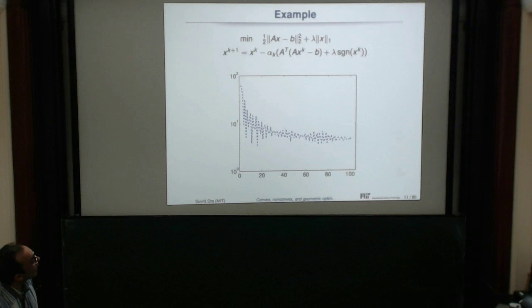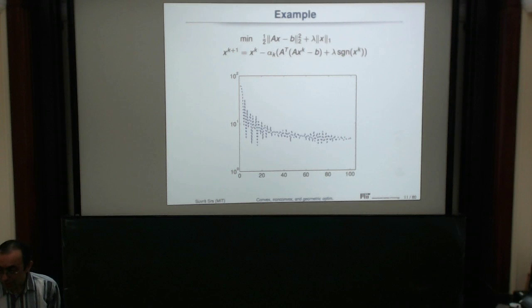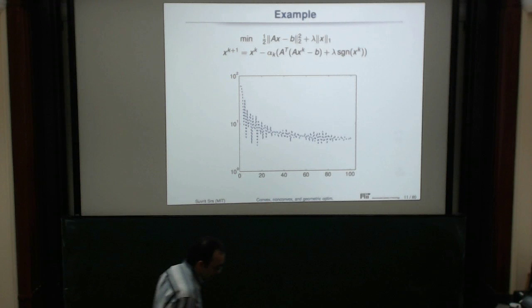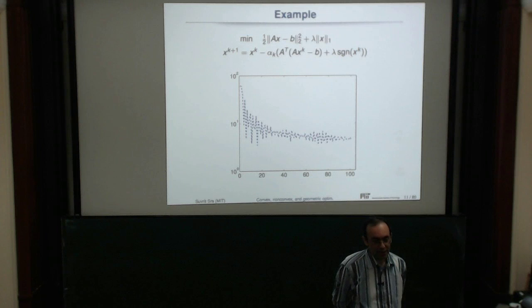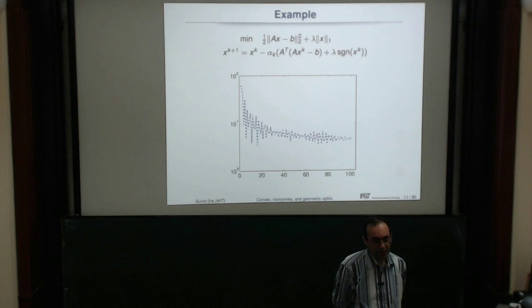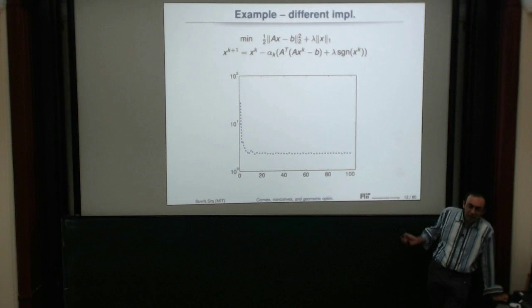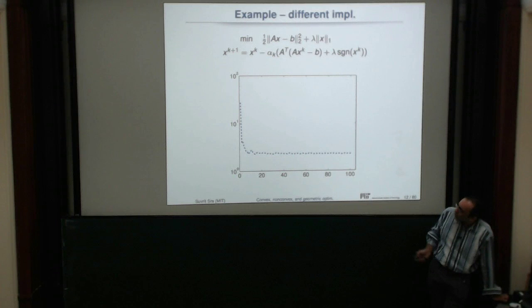It's not always necessary to ensure strict monotonic descent — breaking the shackles of strict monotonic descent can help us come up with simpler, faster methods. The sub-gradient method is one such method. The direction you use with the sub-gradient does not lead to monotonic decrease even if you pick the best possible step size, so a slightly different kind of convergence analysis is needed.